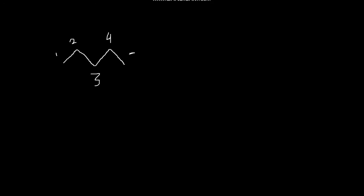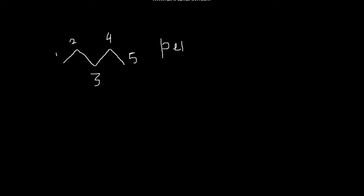Let's go through examples for acyclic compounds. First, a very easy example: a compound with 1, 2, 3, 4, and 5 carbons. This is an acyclic compound with 5 carbons and no double bond. If you've seen my previous video on basic nomenclature rules, you can name it. The name will be pentane — 'pent' for 5 carbons and 'ane' for no double or triple bonds, only single bonds.